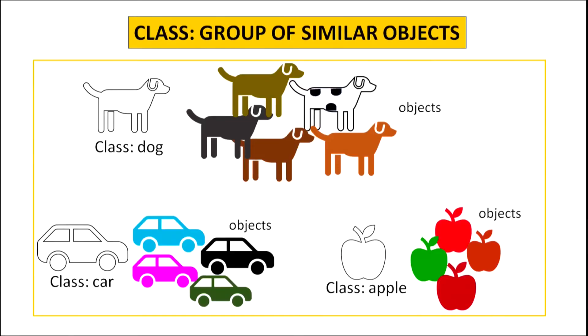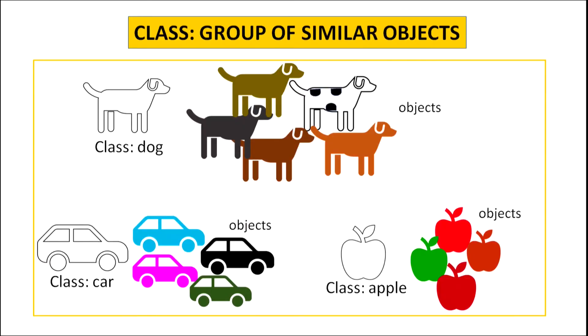Now there may be many objects of the same kind. The objects of similar attributes and common behaviour form a class. All these dogs are objects and they belong to the class dog. Similarly, all these cars and apples belong to the classes car and apple respectively. So class defines what an object is to be, and this definition is given in terms of attributes and behaviour. Class is a blueprint to create objects and an object is an instance of a class.